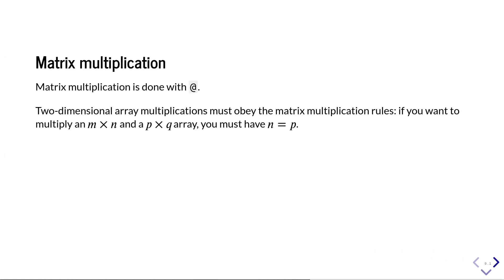We can also do matrix multiplication in NumPy. This has been built in and uses the @ symbol. For two-dimensional array multiplications, you must obey the matrix multiplication rules: if multiplying arrays a and b, the number of columns in a must equal the number of rows in b — the usual matrix multiplication rule.